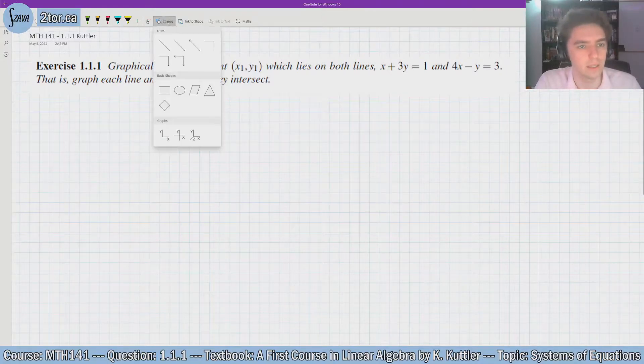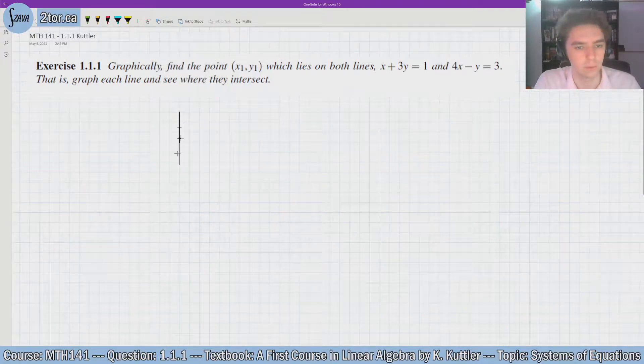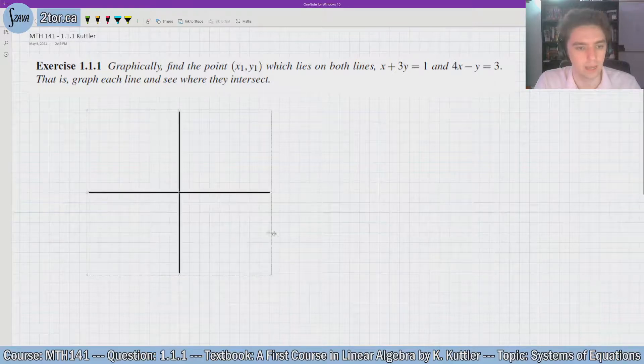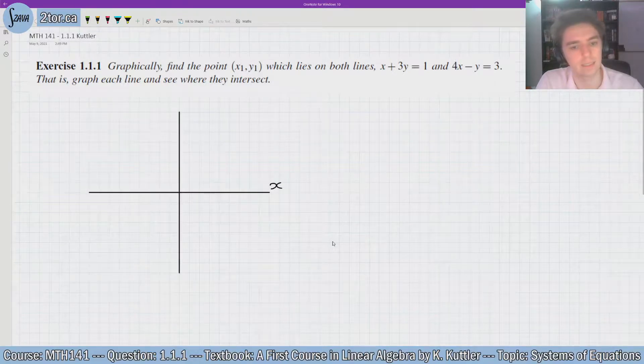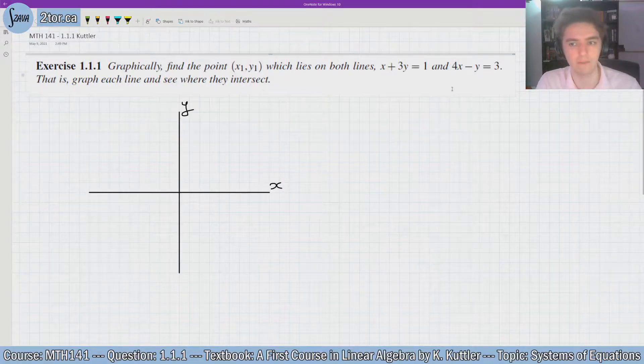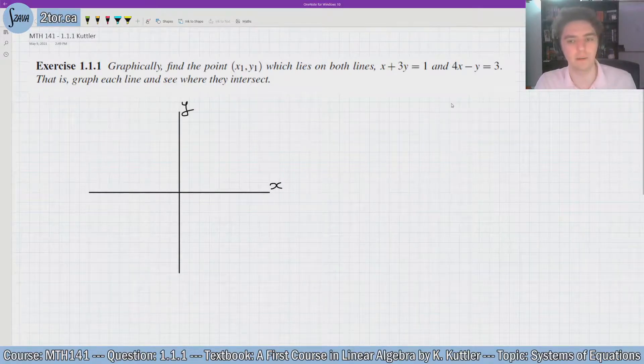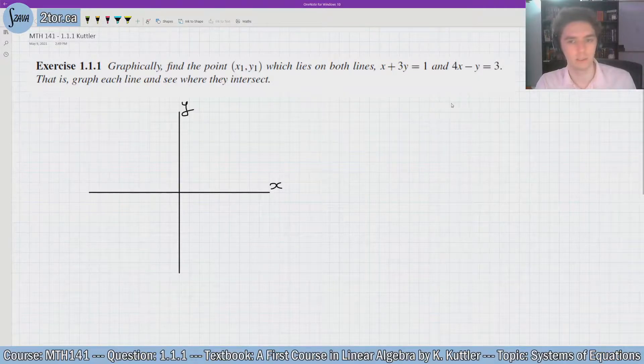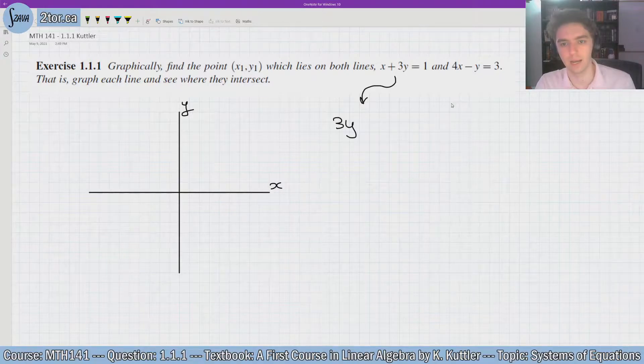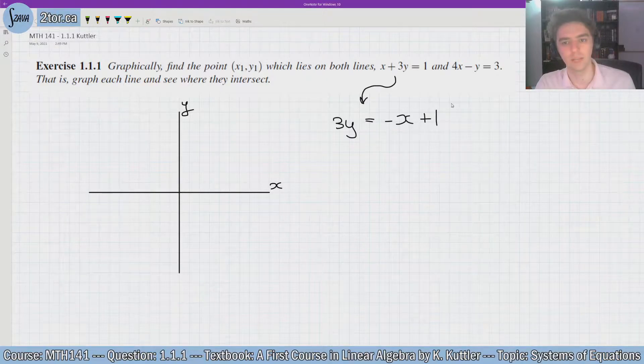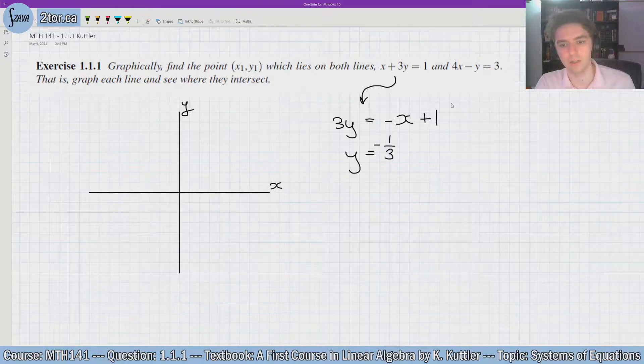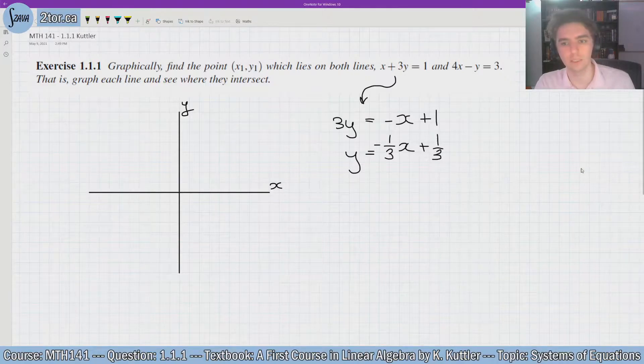So we have our x-y grid. So we have our x-axis, this is our y-axis. I'm going to graph each of these lines. It's going to be a lot easier to graph if I write them in slope-intercept form, y = mx + b. So let's do that. This one I'll rewrite a little bit: 3y = -x + 1, moving the x over. And then y equals, now divide each of these things by 3, so -1/3x + 1/3. Okay, so there's the first one in slope-intercept form.